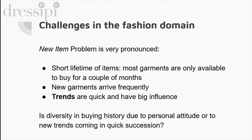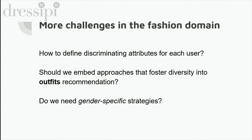Currently at Recipe, we are trying to optimize our recommendation algorithm in terms of accuracy and diversity — more than one evaluation metric. But while trying to model user behavior, we should ask whether the diversity in buying history is actually due to the personal attitude of the user, or is just a consequence of new trends arriving in quick succession. Our garments are characterized by many attributes, so it's quite challenging to identify which attributes drive user choices in the fashion domain and how to define discriminating attributes for each user.